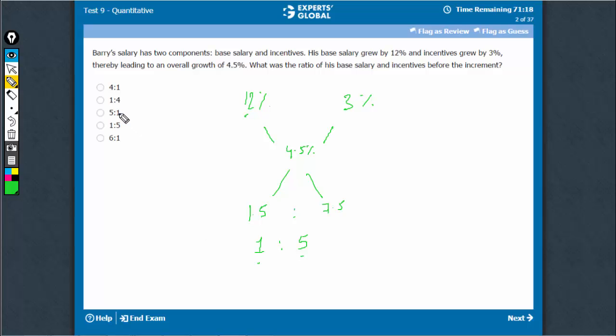I'm sure 5 is to 1 would be an answer option. Don't get trapped into that. This 12% corresponds to 1, and therefore the answer is 1 is to 5.